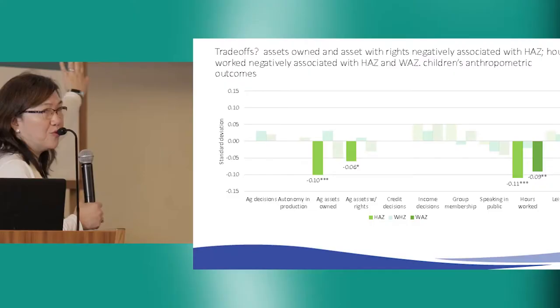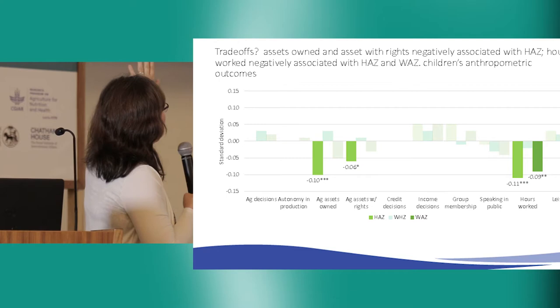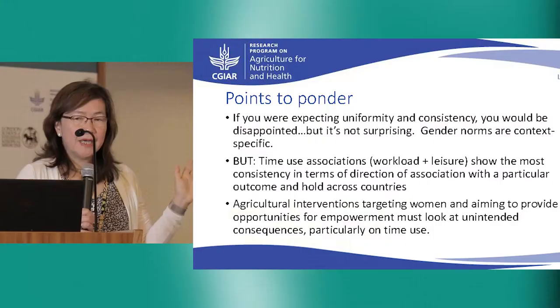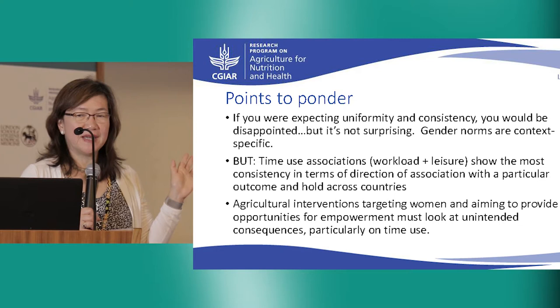We find that group participation reduces exclusive breastfeeding, and satisfaction with leisure improves the dietary diversity score. Looking at trade-offs for child outcomes, assets owned and assets to be derived have negative associations with HAZ, and hours of work also has a negative association. If you were expecting uniformity and consistency, you would be disappointed — but that's not surprising, because gender norms are very context specific.